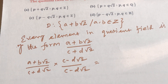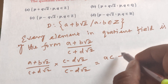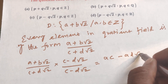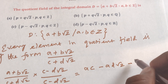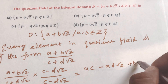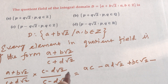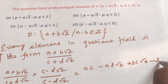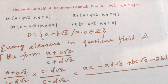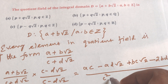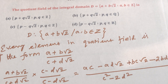Expanding the numerator: A·C plus A·(−D root 2) plus B root 2·C plus B root 2·(−D root 2), giving AC minus AD root 2 plus BC root 2 minus 2BD. The denominator becomes C squared minus 2D squared, using the identity (C plus D root 2)(C minus D root 2) equals C squared minus 2D squared.